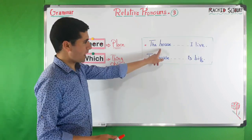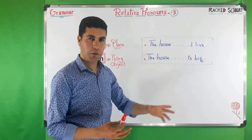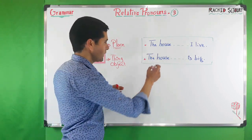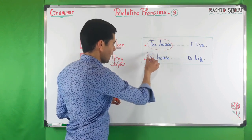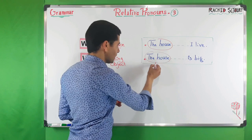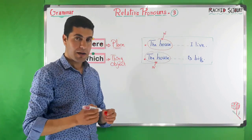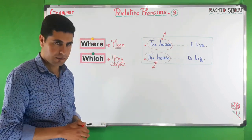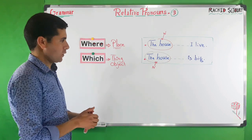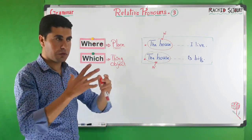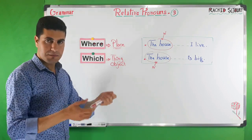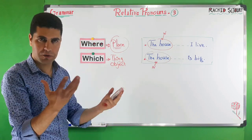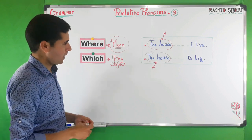Let's look at a simple example. Number one: 'The house I live.' Number two: 'The house is big.' The noun in both cases is 'the house.' The house is a place in both sentences, but which one do we use where with, and which one do we use which with? Sometimes we can talk about a place as an object or a thing.